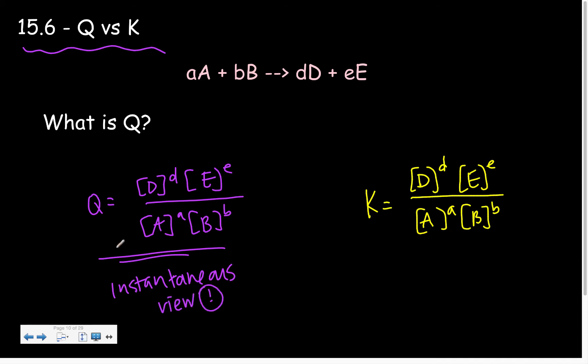Meaning these can be initial concentrations. These can be almost at equilibrium concentrations. These can be any concentrations you want them to be. If we label them with a Q.